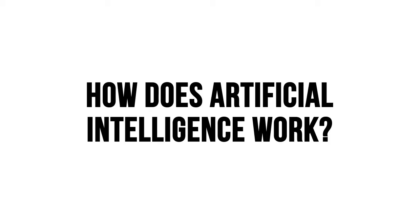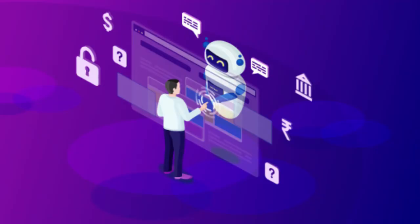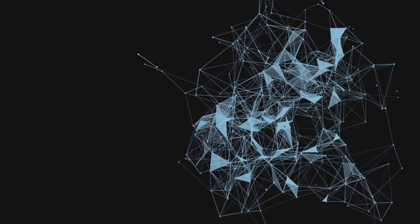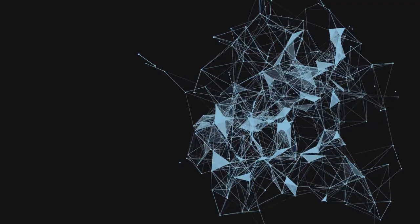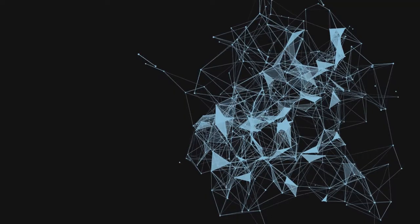How does artificial intelligence work? Artificial intelligence is an all-encompassing term which covers a myriad of different intelligent algorithms, of which the most popular is the neural network. Neural networks are built up by neurons. You can imagine them as a small computer chip that gets an input and, based on some formula, gives out some output.